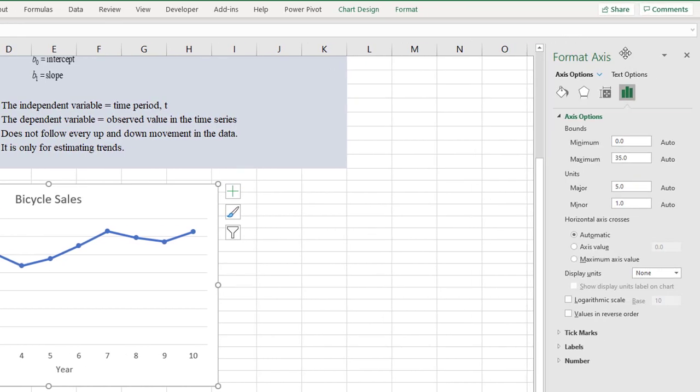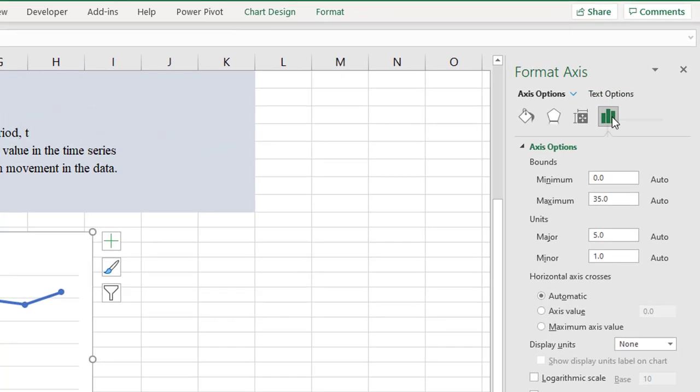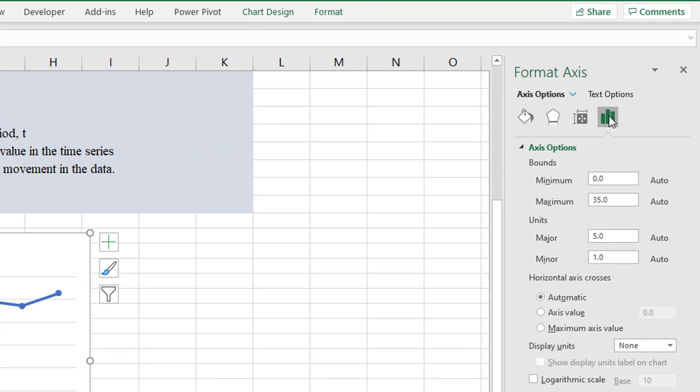Now we have the Format Axis dialog box. Here we are in the Axis Options part of the dialog box. Then for the minimum bound, maybe we would choose 15 instead of 0.